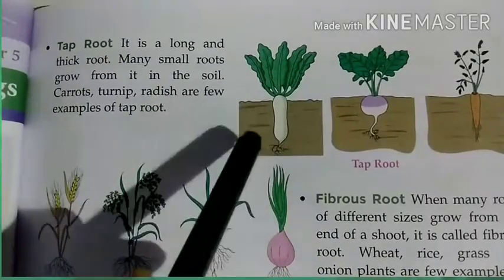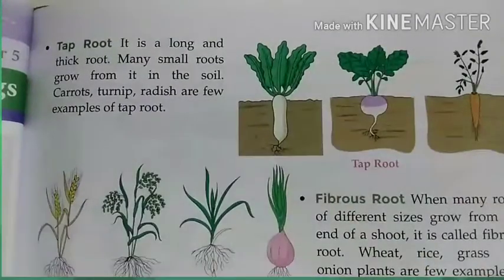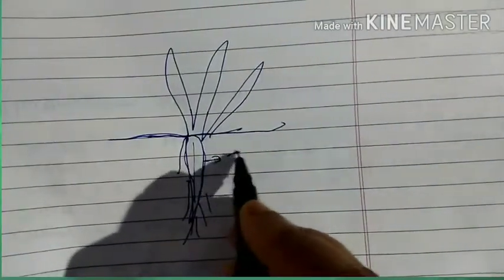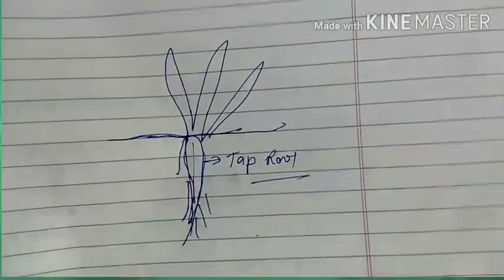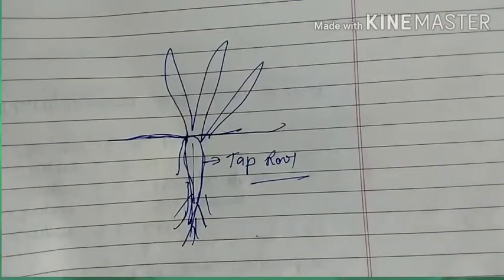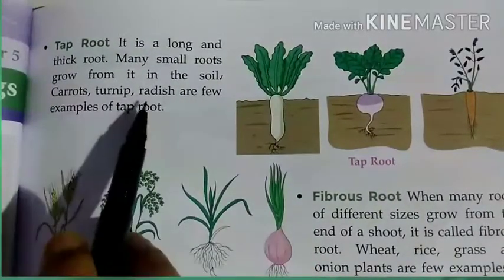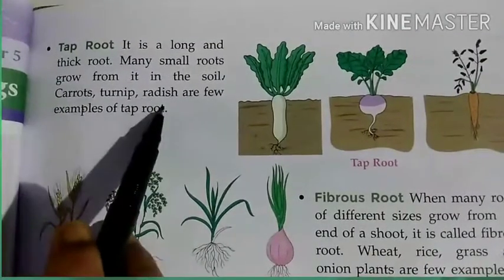This type of long and thick root is called tap root. The thinner branches are small roots growing from the main tap root. The examples of tap root are carrots, turnip, and radish.